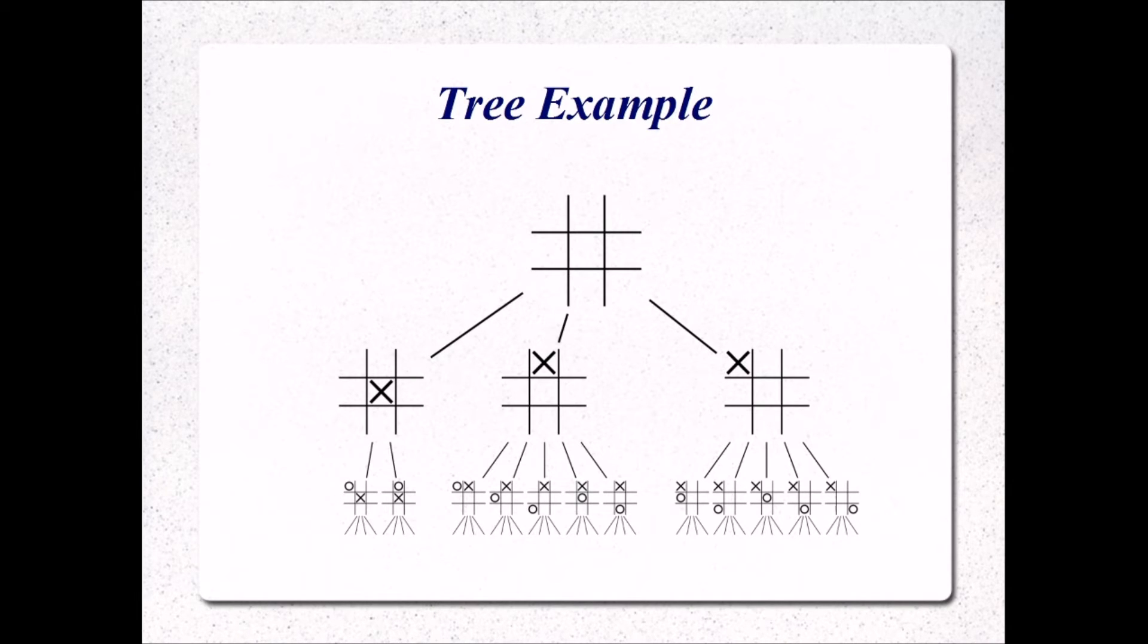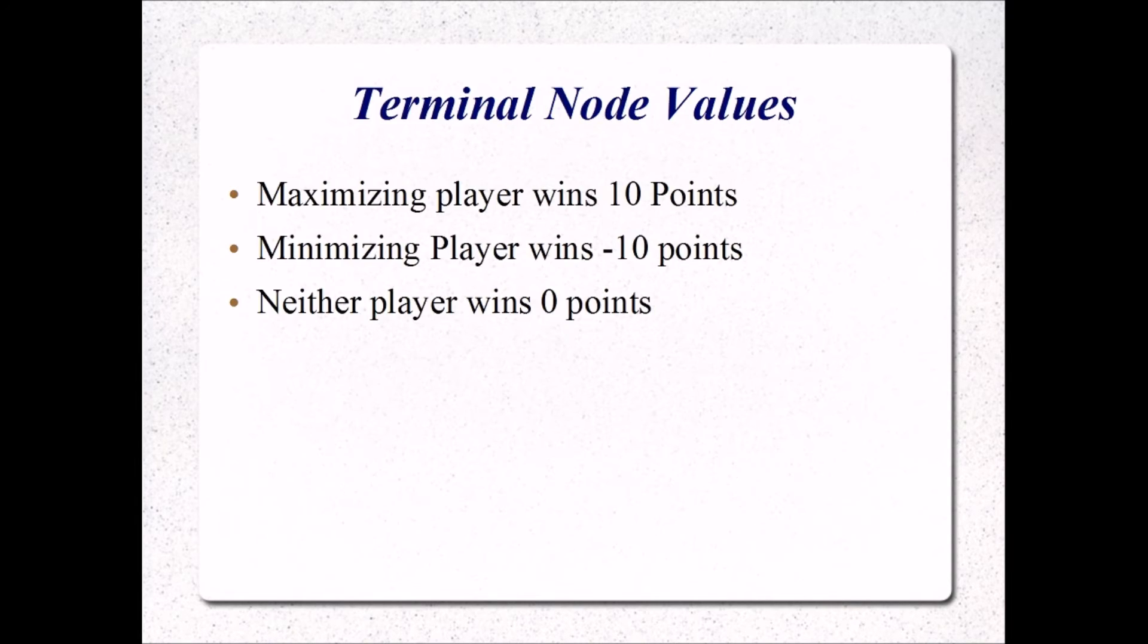This is what the tree would look like. This is from an empty board state. X is the first player, so they evaluate the board first. And every possible outcome of the game is evaluated. And when it evaluates all those possible outcomes, every terminal node or node where the game ends is assigned a point value.